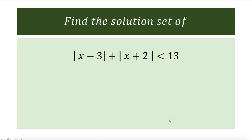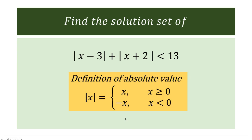Good morning. Let's talk about double absolute value inequality. Solving double absolute value inequality is one of those topics in pre-calculus where many students are confused because of the nature of the definition of absolute value. By definition, the absolute value of x is equal to this piecewise function: x when x is greater than or equal to 0, or negative x if x is less than 0. In this given double absolute value inequality, we are going to apply this piecewise definition for every absolute value, and that will result in 4 cases.